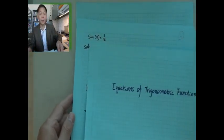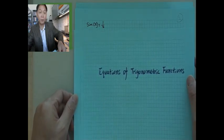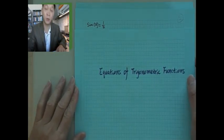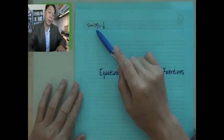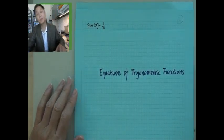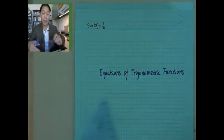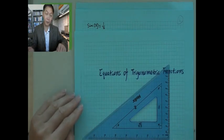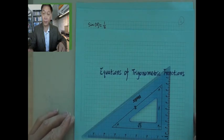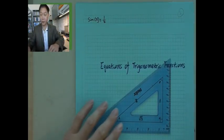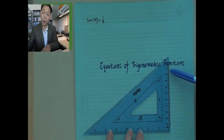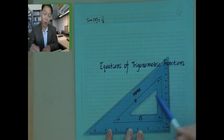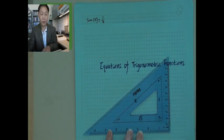Here is the example. We are given sin x equals one-half, and we want to find all the x that satisfy this equation. If you look at this ruler, for this ruler the opposite side over hypotenuse is one-half, so this angle is 30 degrees, or pi over 6.